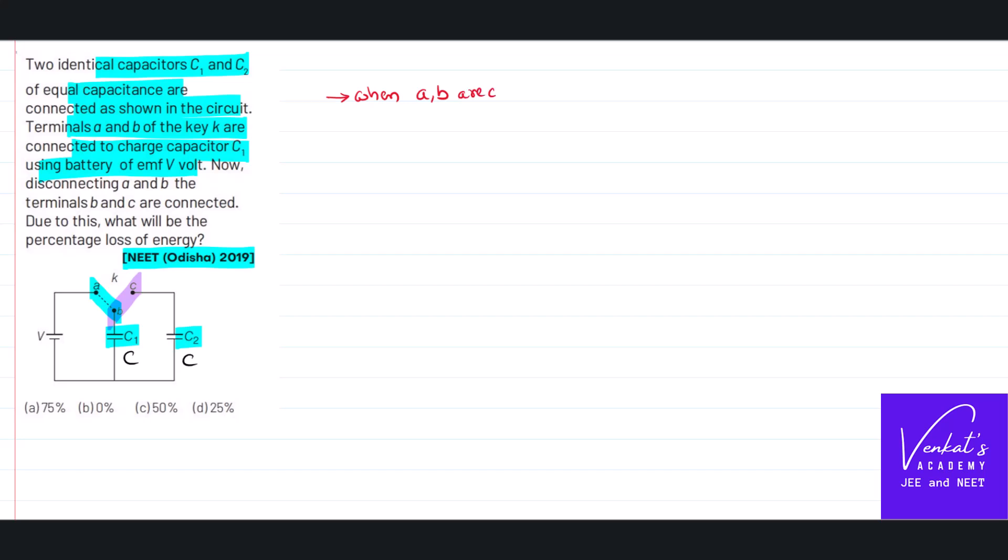Let us see the part that only A and B are connected. This is how it is connected. Now when A and B are connected, it is obvious that C2 is not in connection. The second capacitor is not in connection. Only one capacitor C1 is in connection with a potential difference V.